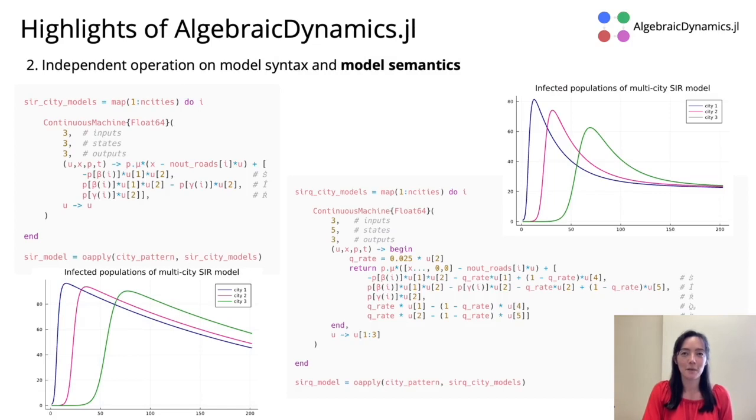On the last slide, we saw what happens when we change the diagram of systems while we leave the elementary models intact. We can also do the opposite. We can change the elementary models while leaving the diagram of systems intact. And this is called operating on model semantics.